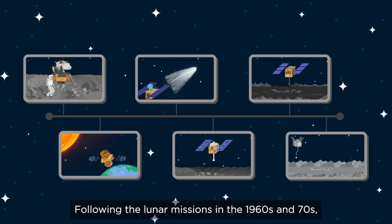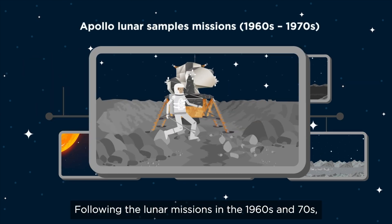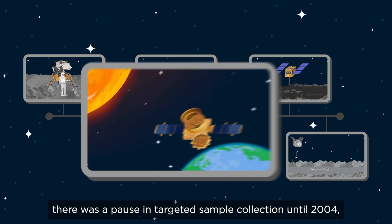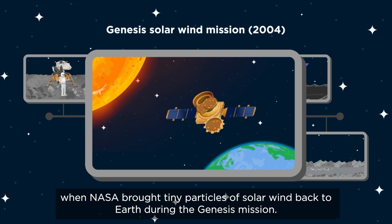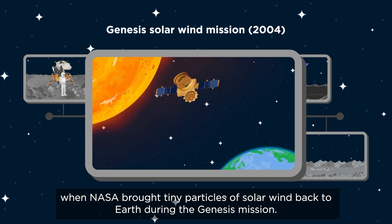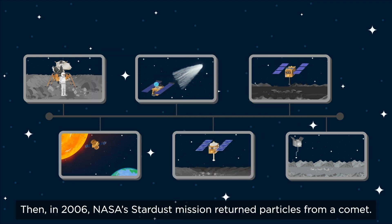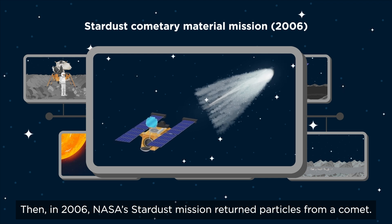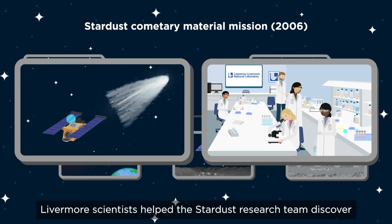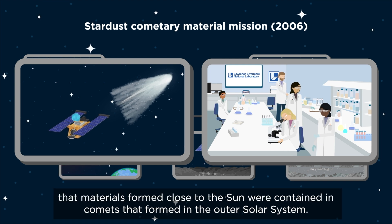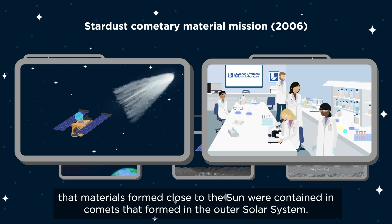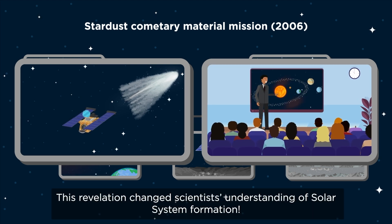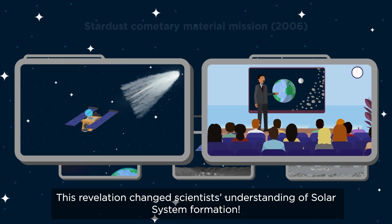Following the lunar missions in the 1960s and 70s, there was a pause in targeted sample collection until 2004, when NASA brought tiny particles of solar wind back to Earth during the Genesis mission. Then in 2006, NASA's Stardust mission returned particles from a comet. Livermore scientists helped the Stardust research team discover that materials formed close to the Sun were contained in comets that formed in the outer solar system — a revelation that changed scientists' understanding of solar system formation.